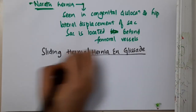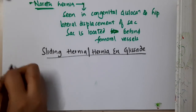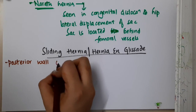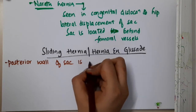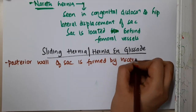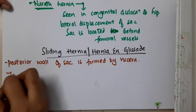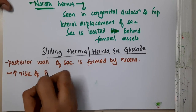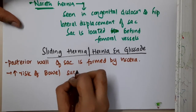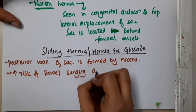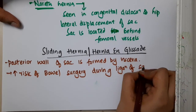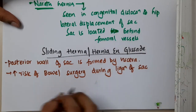In sliding hernia, the posterior wall of the sac is mainly formed by viscera. Because the posterior wall of the sac is formed by viscera, there will be an increased risk of bowel injury during ligation of the sac. We should be very careful while ligating because of this viscera.